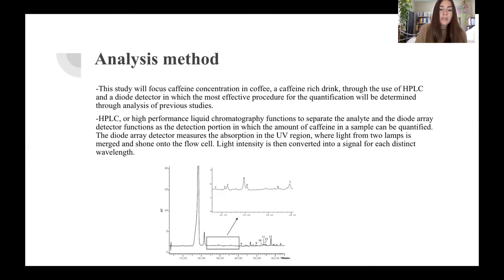So HPLC, or high performance liquid chromatography, functions to separate the analyte, and the diode detector functions as the detection portion in which the amount of caffeine in the sample can be quantified. The diode detector measures the absorption in the UV region, where light from two lamps is merged and shone onto a cell. Light intensity is then converted into a signal for each distinct wavelength.